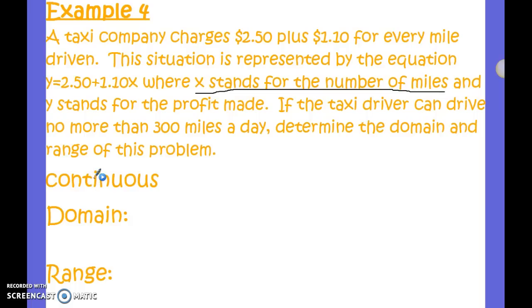Since this is continuous data, we are going to use inequalities when we write our domain and range. The problem tells us the taxi driver can drive no more than 300 miles a day, meaning he could drive zero miles or up to 300 miles. Since this is continuous data, we use inequalities. So the domain is: zero is less than or equal to x, is less than or equal to 300, because he could drive anywhere from zero to 300 miles in a day.